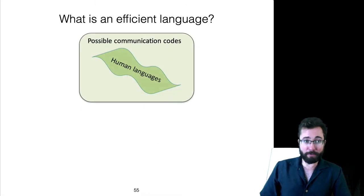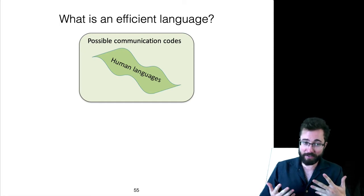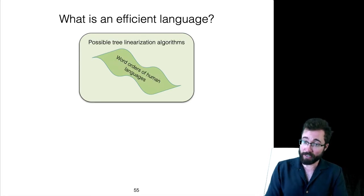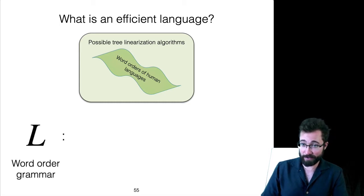Now, we're going to be applying this approach of thinking about human languages as a subset of possible communication codes shaped by functional constraints. In particular, looking at the word orders of human language as a subset of the possible tree linearization algorithms.